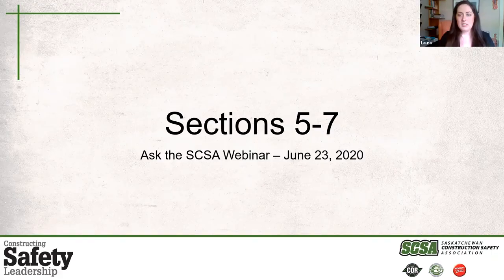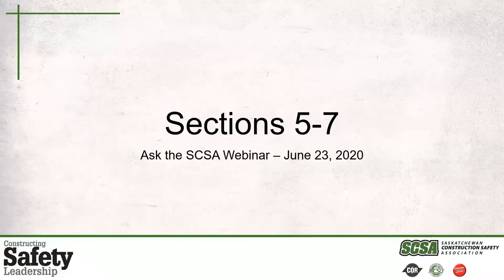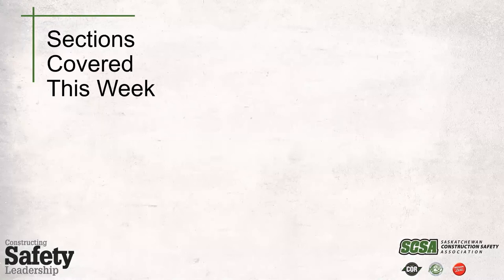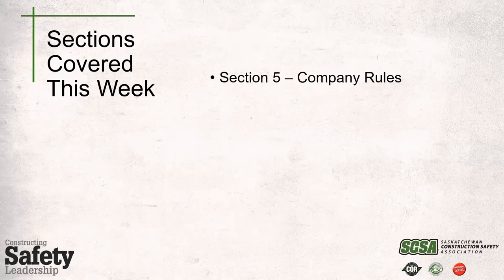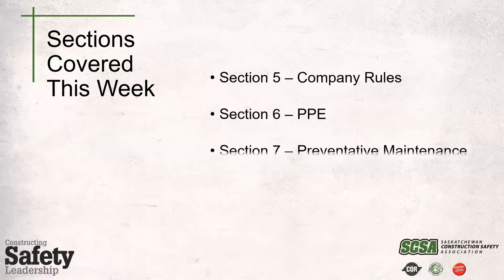This week we're going to be going over sections five through seven of the audit tool. The goal is to help our members and clarify what exactly the audit tool is asking for, and what criteria needs to be met to meet the core standard. Section five is company rules — any company-specific rules regarding expectations and behavior, as well as progressive discipline procedures. Section six is personal protective equipment — internal company policies and guidelines on using PPE. Section seven is preventative maintenance, encompassing any company equipment, tools, or vehicles that require maintenance.